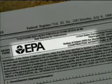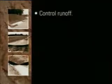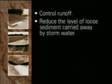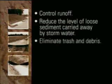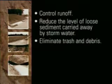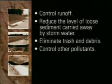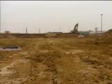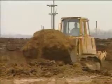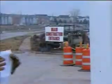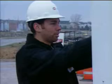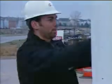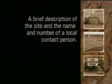This permit requires that you implement BMPs to control runoff, reduce the level of sediment carried away from the site by stormwater drainage, eliminate trash and debris, and control other pollutants from the construction site. After the NOI form is filed, the local stormwater authority will authorize coverage under the NPDES General Permit. The NOI or Permit Authorization should be posted at the entrance of the project site with a brief description of the site and the name and number of a local contact person.